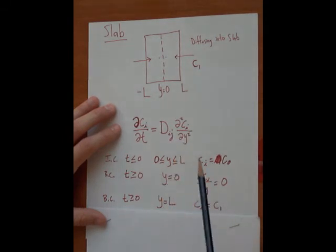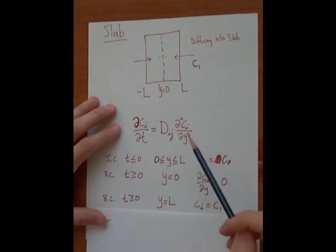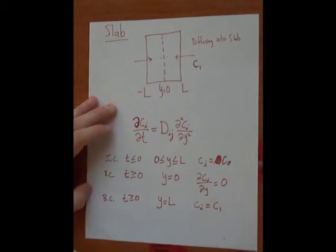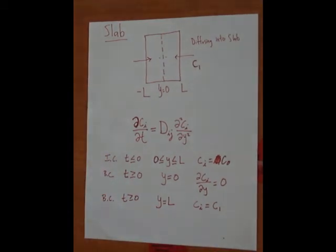So, these are our governing equation and our boundary conditions that we can use to solve this equation and figure out the concentration profile through this slab. One of the things that is very helpful is non-dimensionalization of the variables.